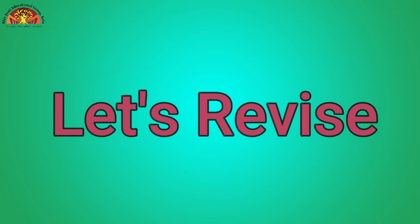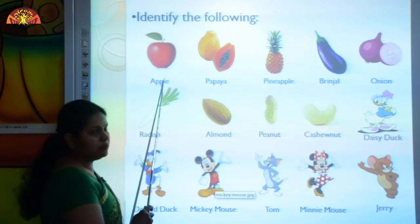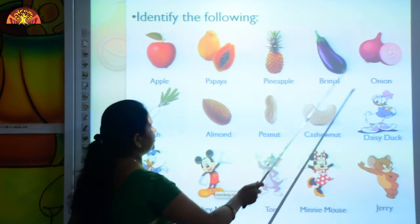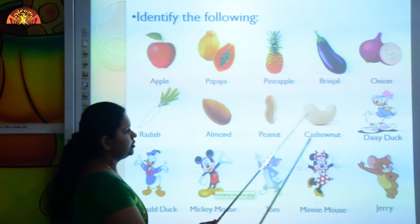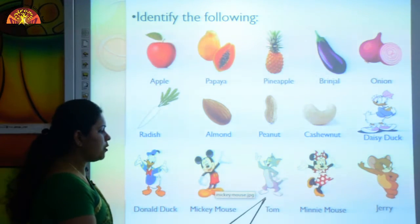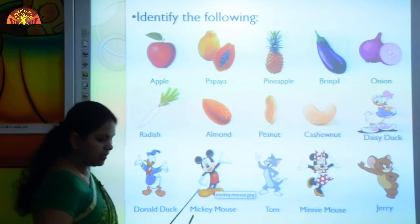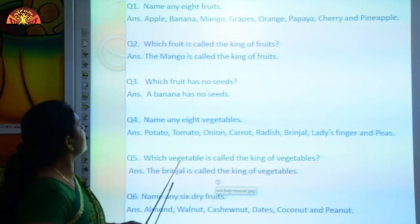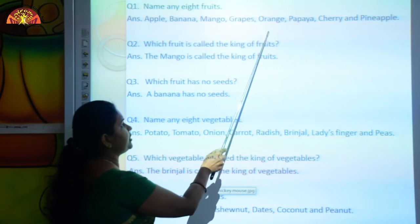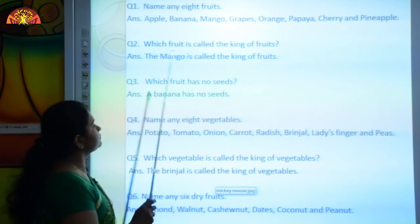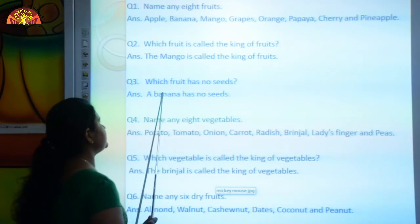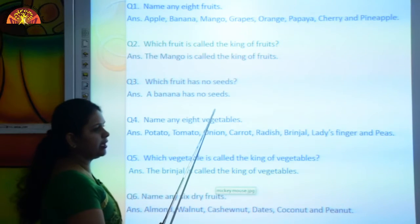Let us revise all these question answers again, kids. Identify the following: apple, papaya, pineapple, brinjal, onion, radish, almond, peanut, cashew nut, Daisy Duck, Donald Duck, Mickey Mouse, Tom, Minnie Mouse, Jerry. Name any eight fruits: apple, banana, mango, grapes, orange, papaya, cherry, and pineapple. Which fruit is called the king of fruits? The mango is called the king of fruits. Which fruit has no seeds? A banana has no seeds.